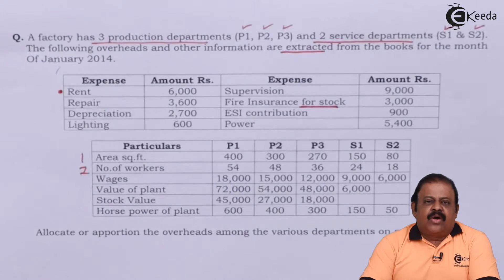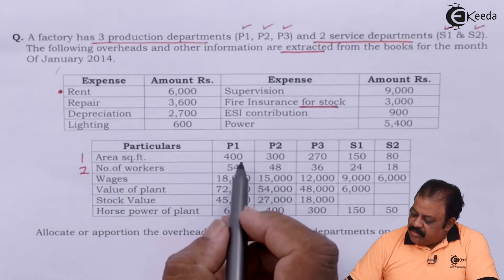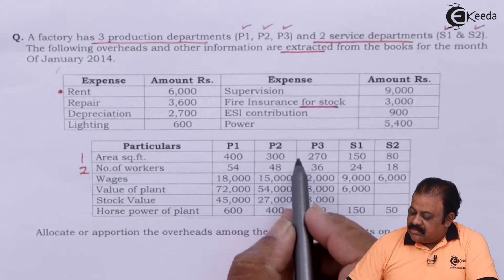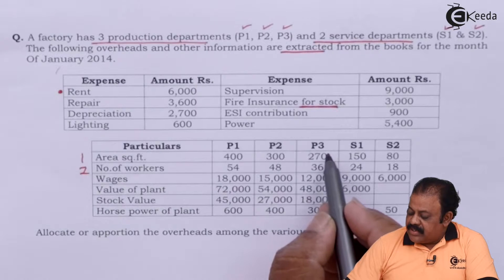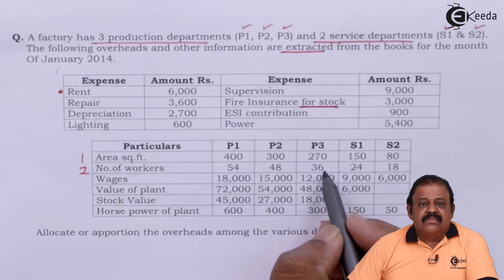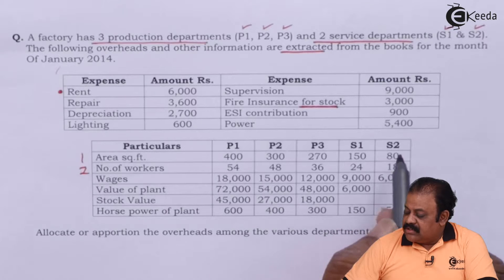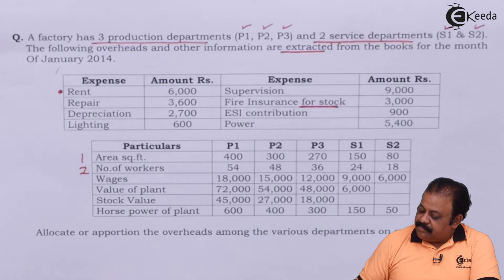Number of workers is the second parameter. Based on this, we can allocate certain expenses. Production department 1 has 54 workers, P2 has 48 workers, P3 has 36 workers, and service department S1 has 24 workers. We are required to calculate the ratio of number of workers.